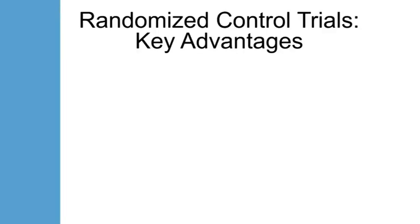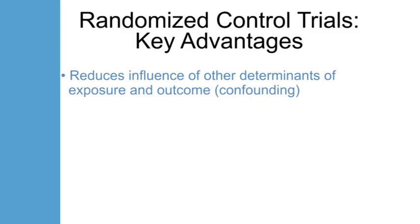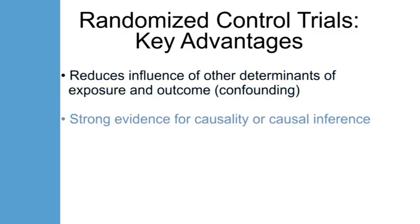Now let's talk about the key advantages to performing randomized control trials. First, randomization reduces the influence of other determinants of exposure and outcomes, i.e., confounding. This study design provides strong evidence for causality or causal inference. Since investigators assigned the exposure or medical treatment, the time or temporal relationship between exposure and outcome is clear.